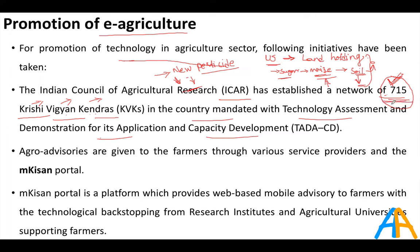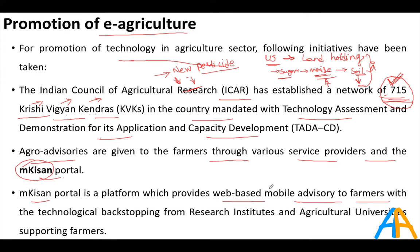Agro-advisories are given to farmers through service providers and the mKisan portal. The mKisan portal provides web-based and mobile advisory to farms — farmers register their mobile number, enter details about their type of farming, and regularly receive advisories from research institutes and agricultural universities.